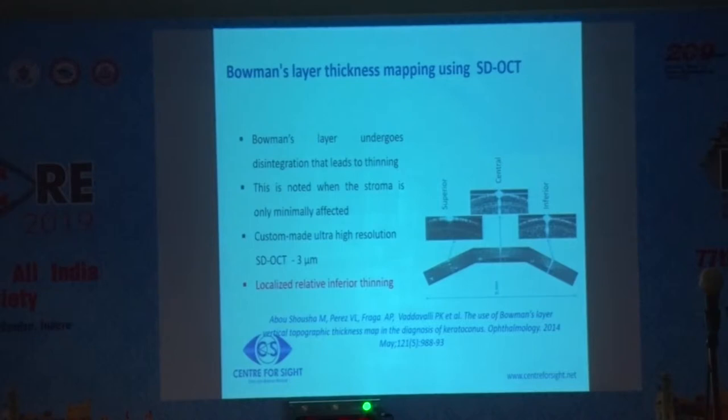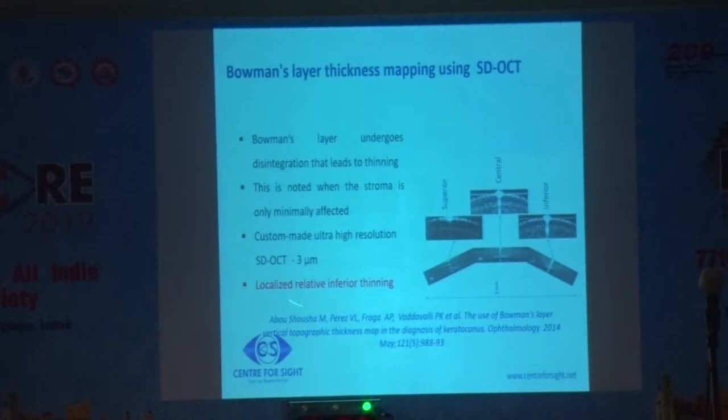Even before the epithelial changes, we can see the disintegration of Bowman's membrane on AS OCT, which appears as localized inferior thinning.